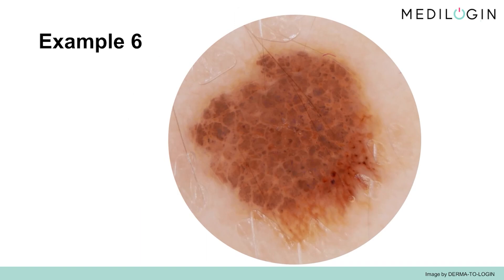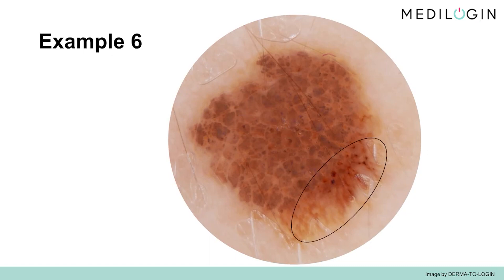Let us now move on to another example. The basic pattern of this nevus cell nevus is also characterized by clots. It is uniformly pigmented and relatively sharply bordered. One recognizes sporadic dots with dark pigmentation. However, in this border area, it is noticeable that a second pattern is added. Here you can see radial lines that have a light brown, bordeaux reddish pigmentation, and look different from the rest of the nevus.